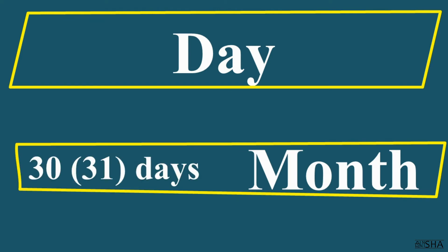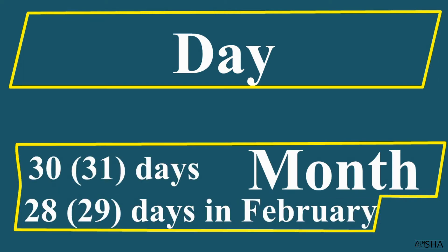We know that there are 30 or 31 days in a month. There are 28 days in February, while there are 29 days in February in a leap year. And of course, we all know that there are 12 months in a year.